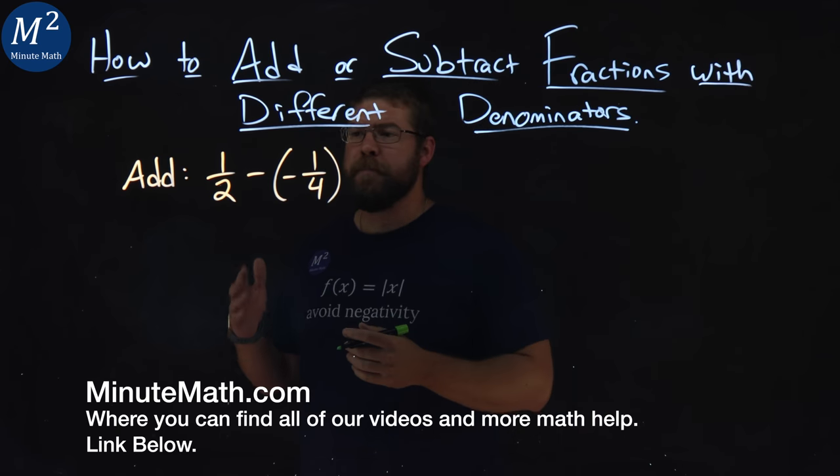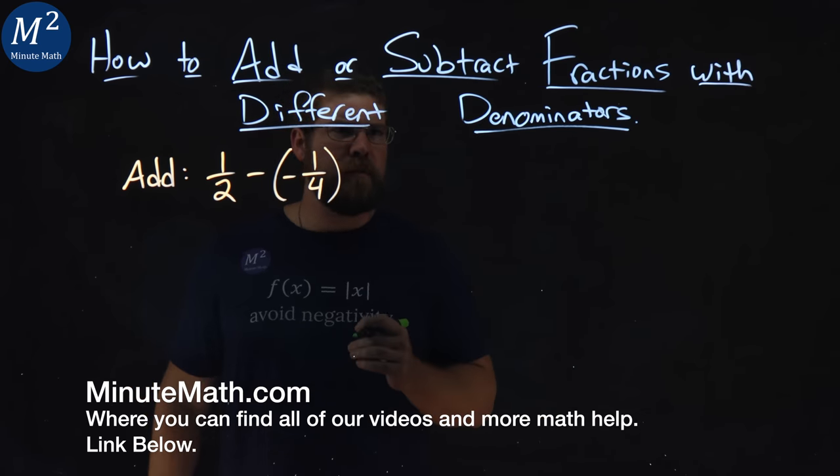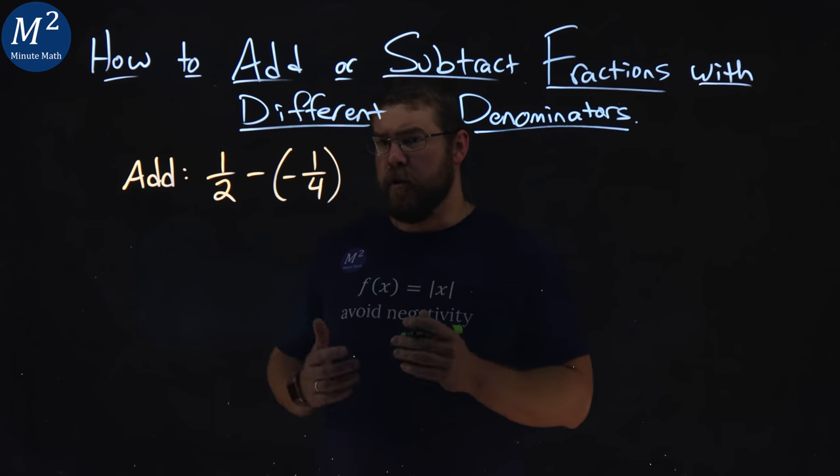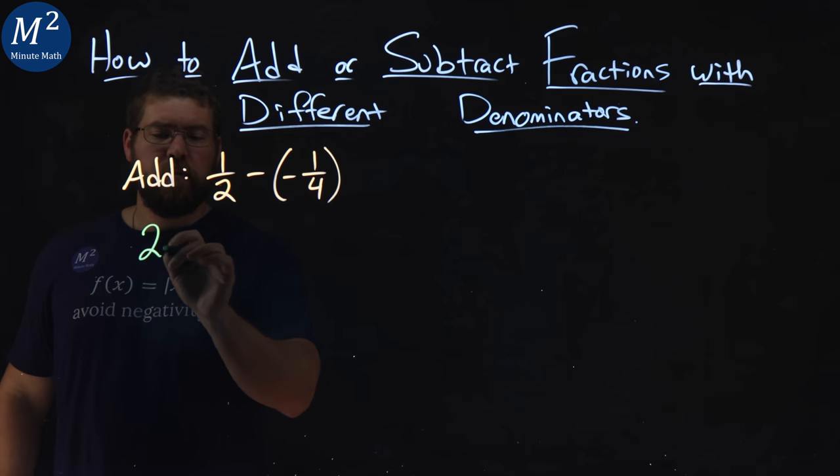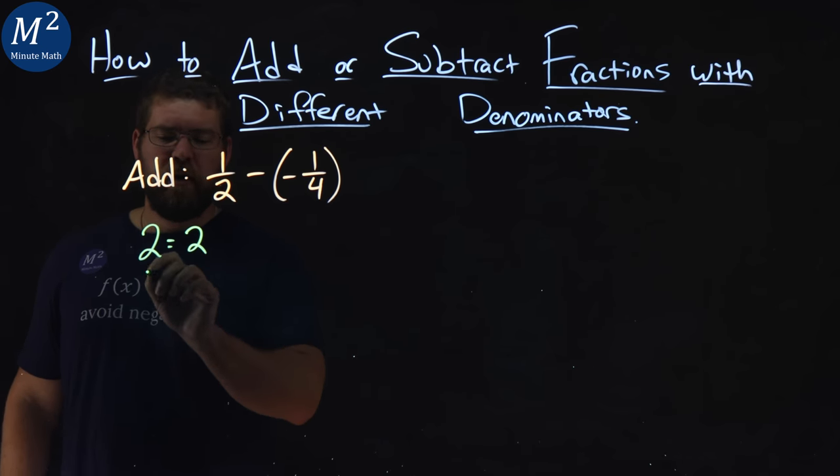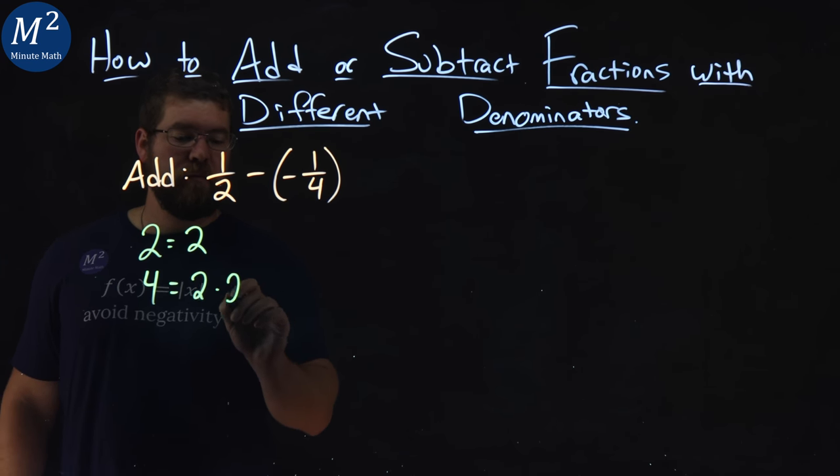We're given this problem right here. Add one-half minus, in parentheses, a negative one-fourth. We want to find the LCD of these two fractions first. Two breaks down to be just two multiplied by itself, and four factors out to be two times two.